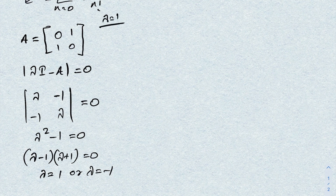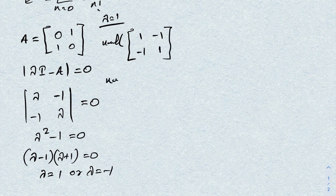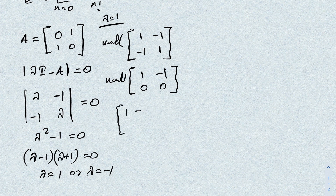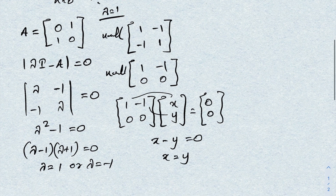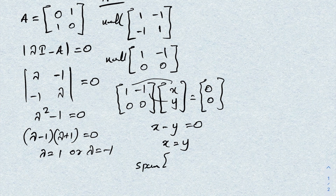When λ = 1, we find the null space of (λI - A) = [[1,-1],[-1,1]]. Row reducing gives [[1,-1],[0,0]], so x - y = 0, meaning x = y. The eigenvector is the span of [1,1].